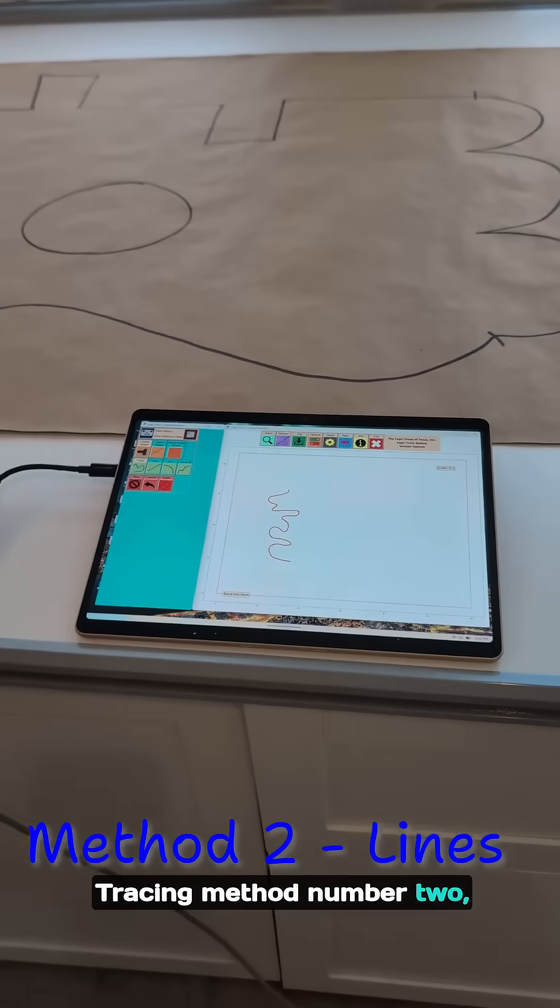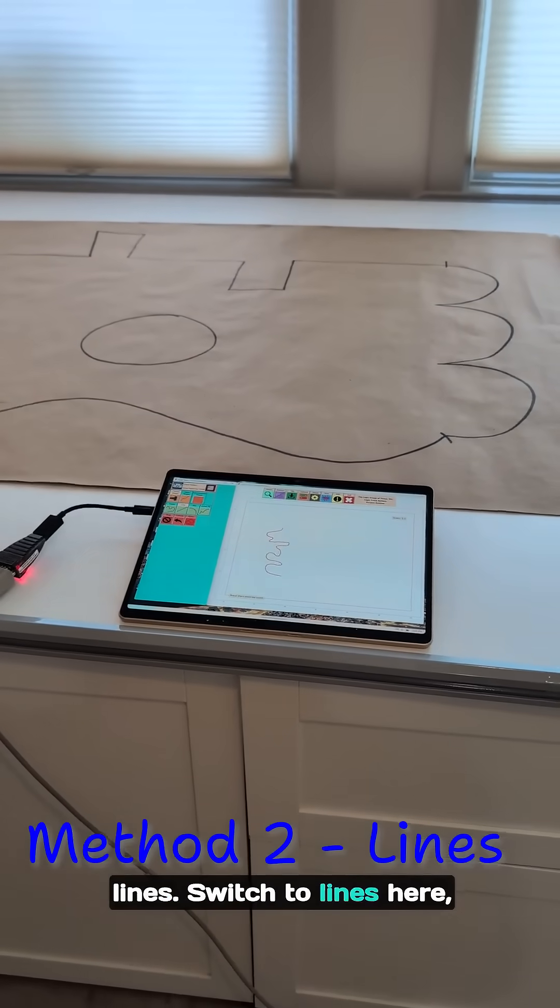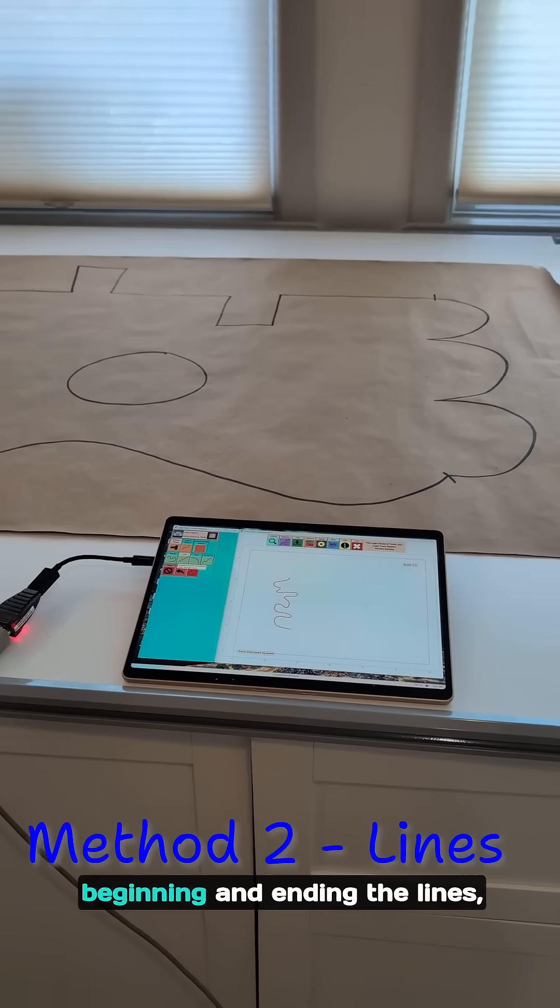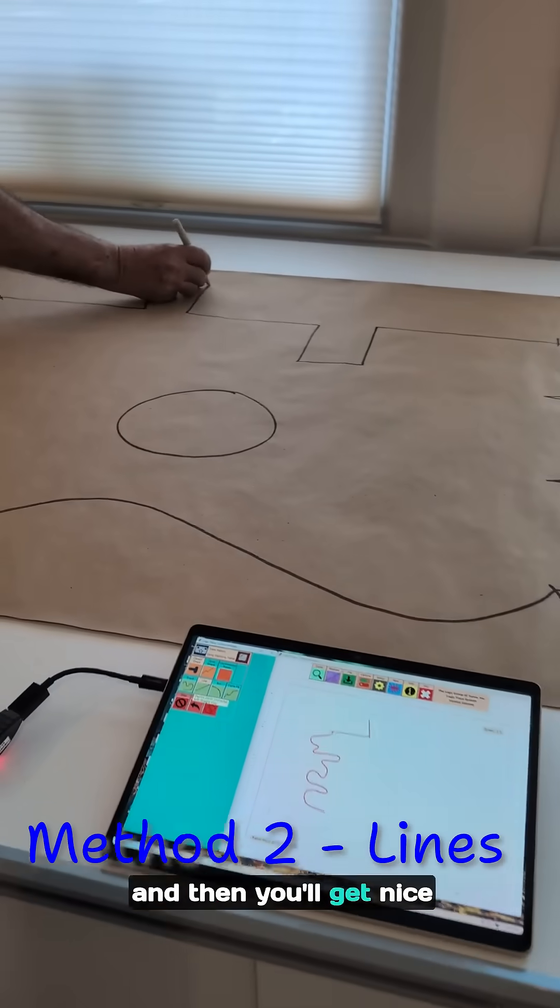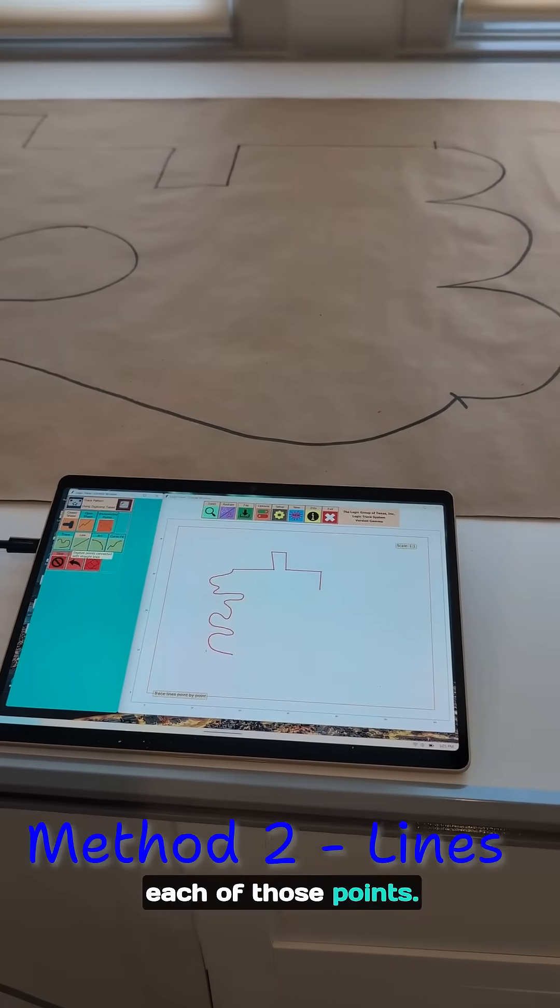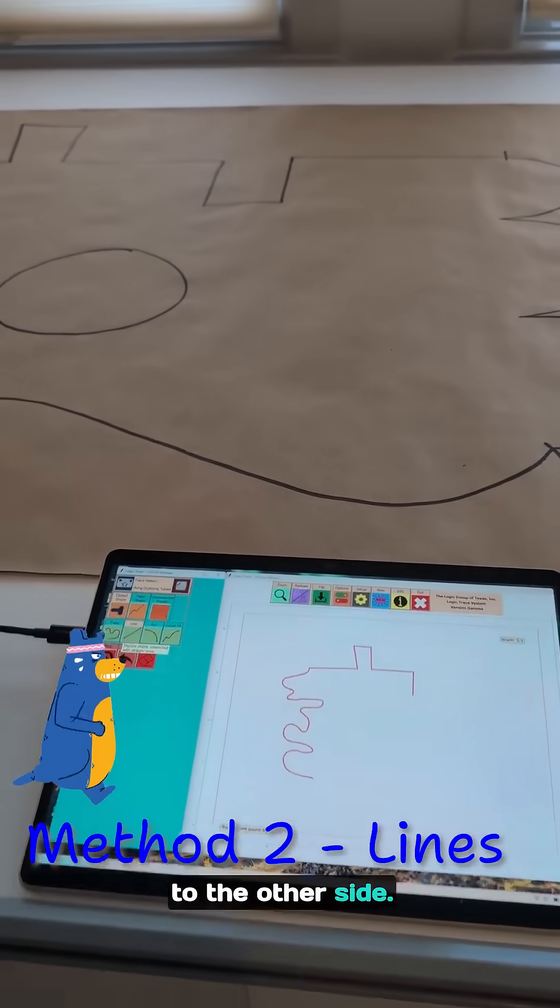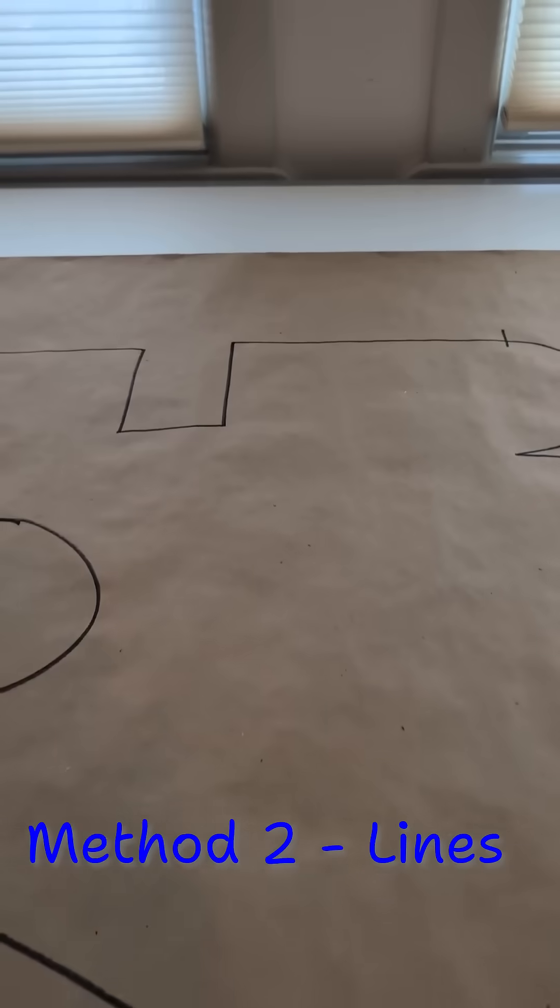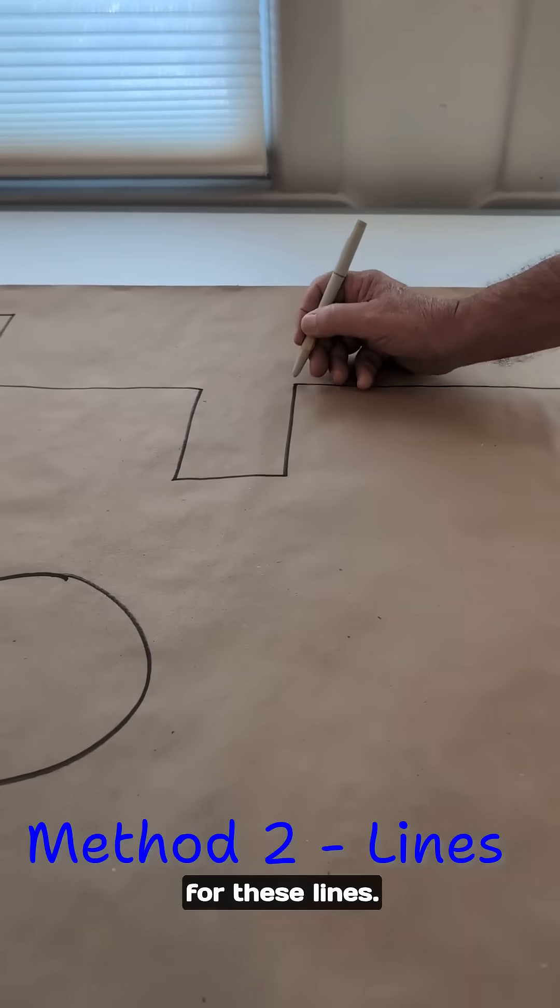Tracing method number two: lines. Switch to lines here. It's just digitized points at the beginning and ending of the lines, and then you'll get nice straight lines between each of those points. Let me run over here to the other side. These points here for these lines.